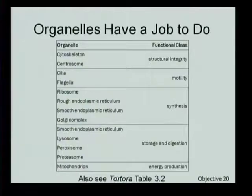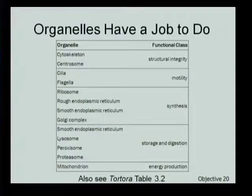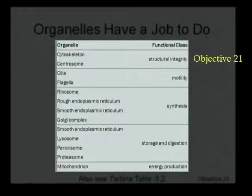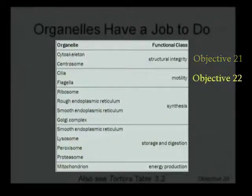I want to talk about the different organelles and give each one its own objective. The structural integrity organelles — the cytoskeleton and the centrosome — are going to be in objective 21. The motility organelles — cilia and flagella — are going to be in objective 22.